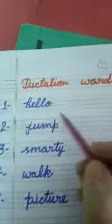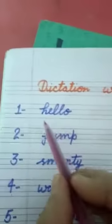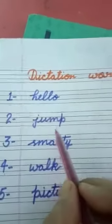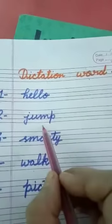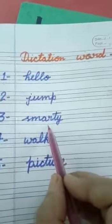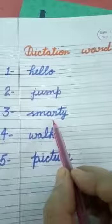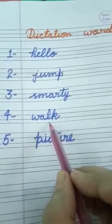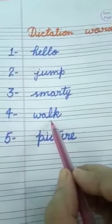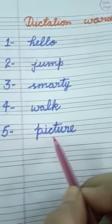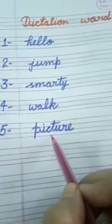Now we will revise the dictation words of lesson 2. H-E-L-L-O, Hello. J-U-M-P, Jump. S-M-A-R-T-Y, Smarty. W-A-L-K, Walk. P-I-C-T-U-R-E, Picture.